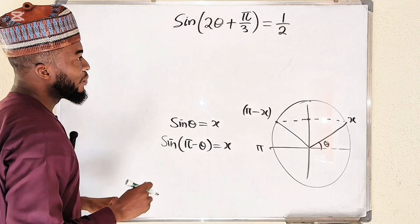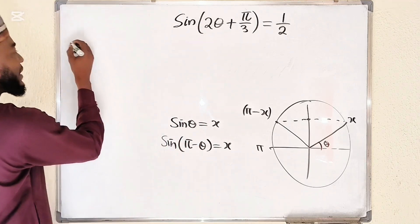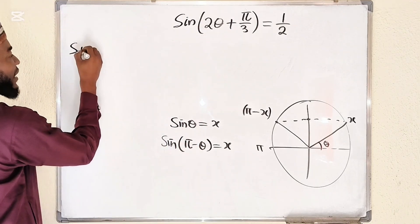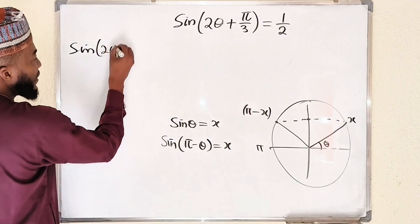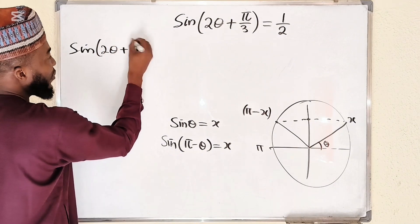So let's solve this problem. You should know that it is either sine of 2 theta plus pi over 3 equal to 1 over 2,